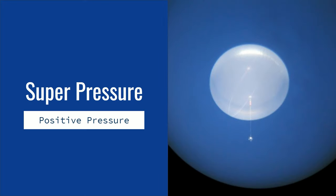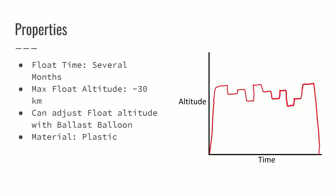Last is the super pressure balloon. Super pressure balloons are used for very long duration flights. So you can see here several months you can have a balloon float. That's a super pressure. And it can adjust its float altitude using a ballast balloon. And once again it is made of plastic.